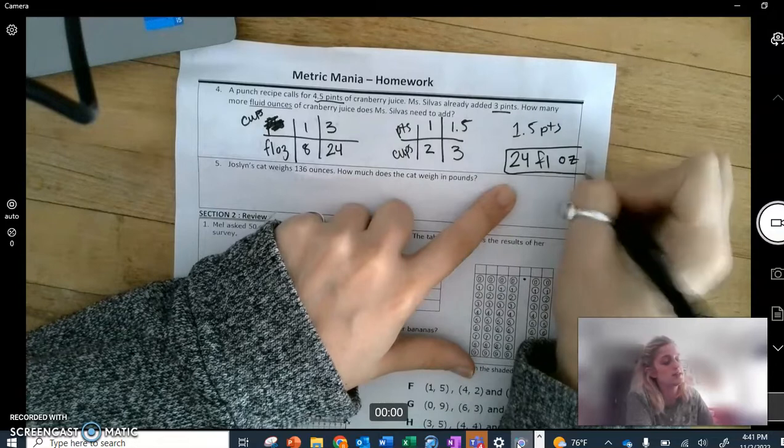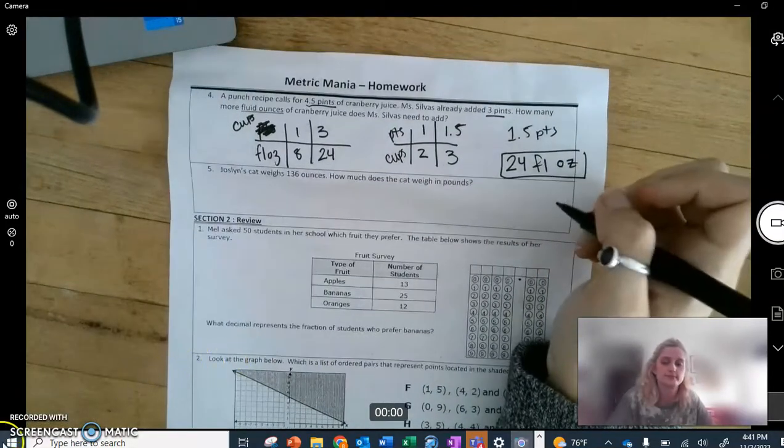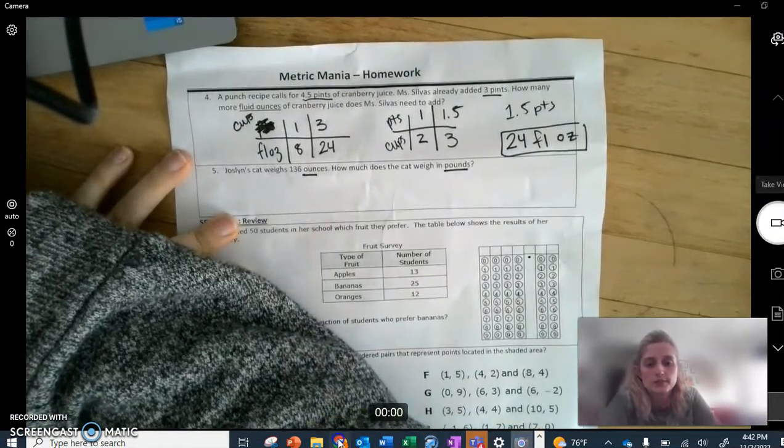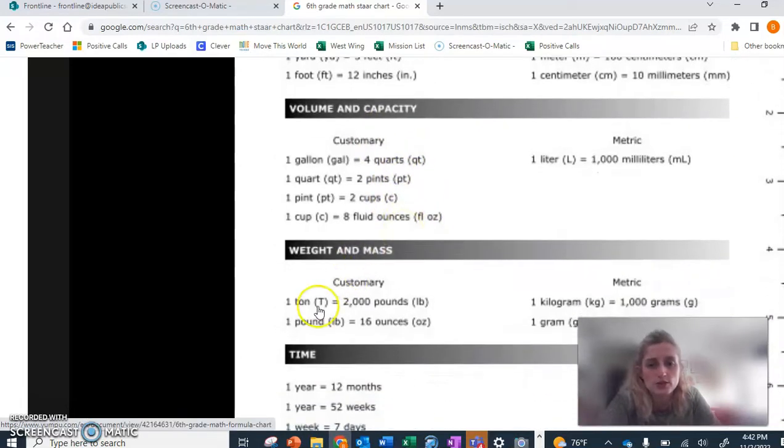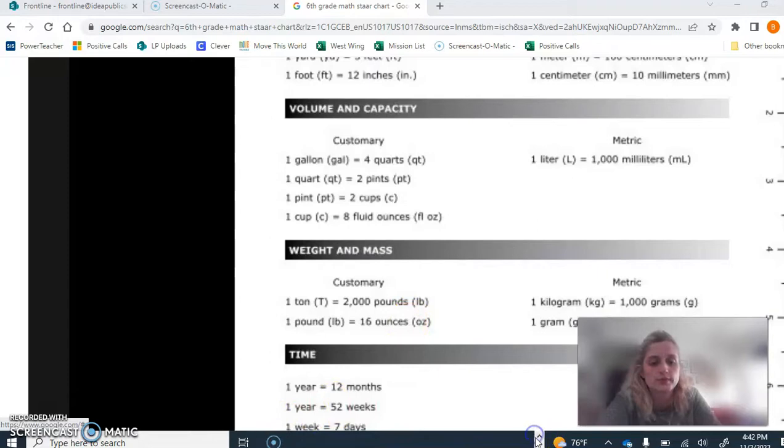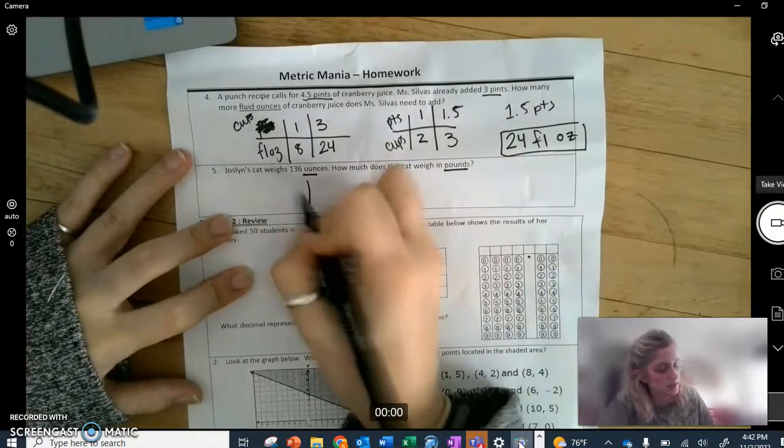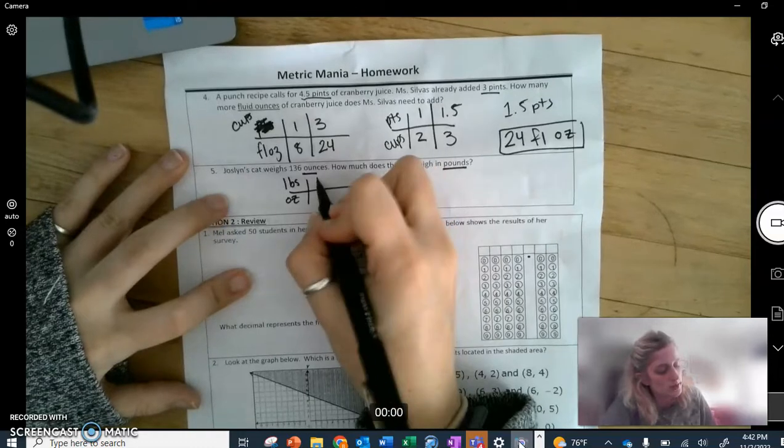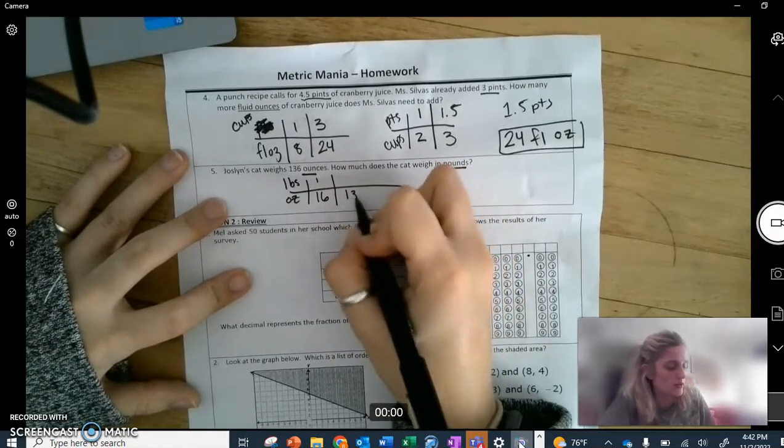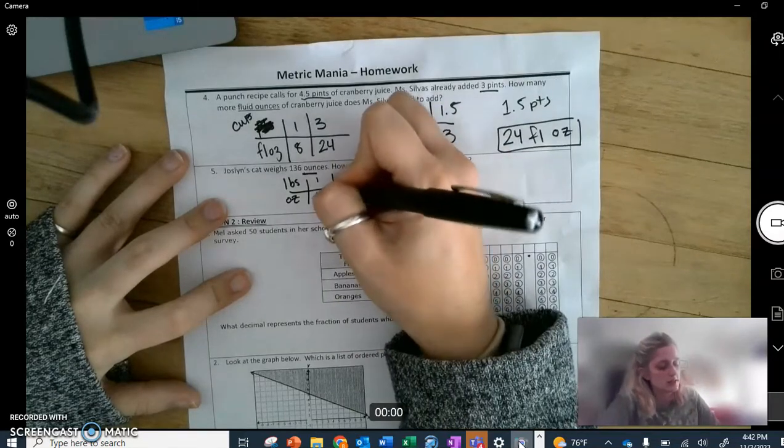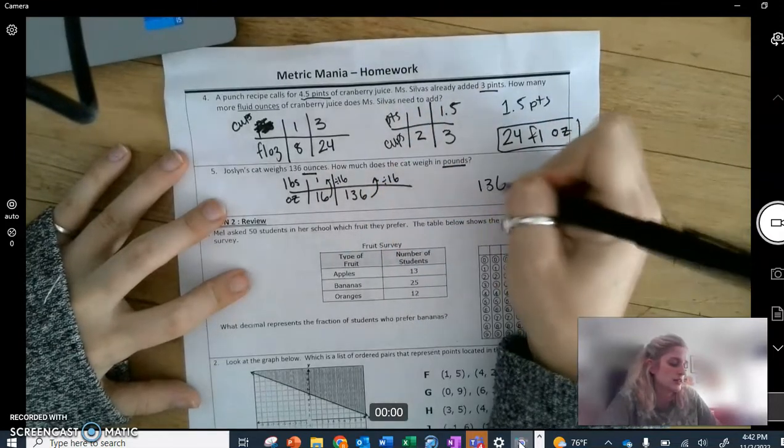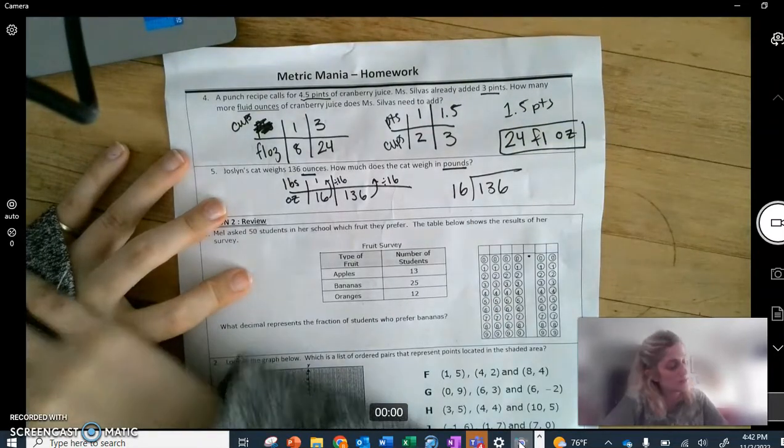This one is ounces and pounds. Back to our star chart, scrolling, scrolling. One pound is 16 ounces. So make our ratio table: pounds, LBS for pounds, OZ for ounces. One pound is 16 ounces. So if we have 136 ounces, you can see here that going from 16 to 1 is going to be a divide by 16. So 136 divided by 16 will be our answer. You can figure that one out.